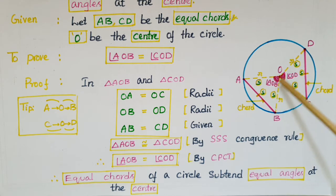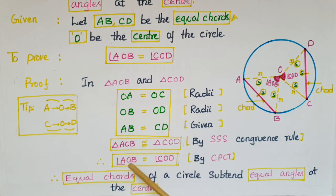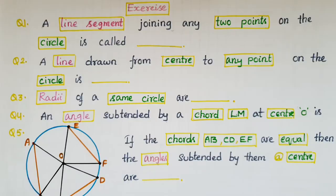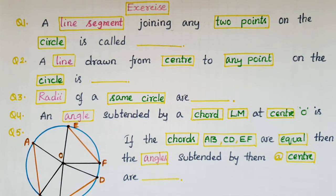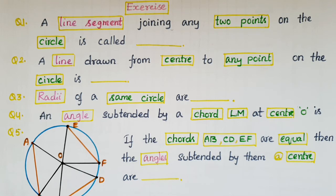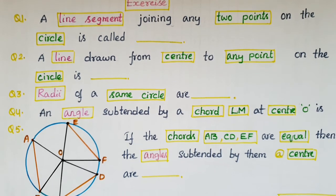Once these two triangles are congruent, we can equate the corresponding parts. Therefore, angle AOB is equal to angle COD. Hence, equal chords of a circle subtend equal angles at the center. Now do this exercise, and here are the answers.